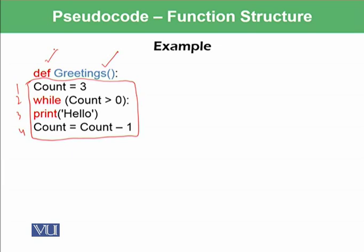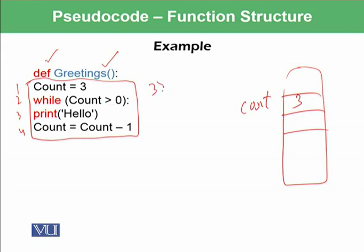Then we have said count is assigned by three and while count is greater than zero, print hello. So what this will be doing, we have a RAM and we have a count somewhere in the RAM that has a value of three. It's checking while count is greater than zero. Yes, three is greater than zero. So print hello. So hello is being printed on the screen.